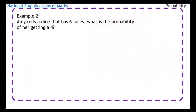So the probability of getting a four is just going to be one, because there's one four on a dice, over total number of outcomes, which is six. So it's just one over six is the answer.